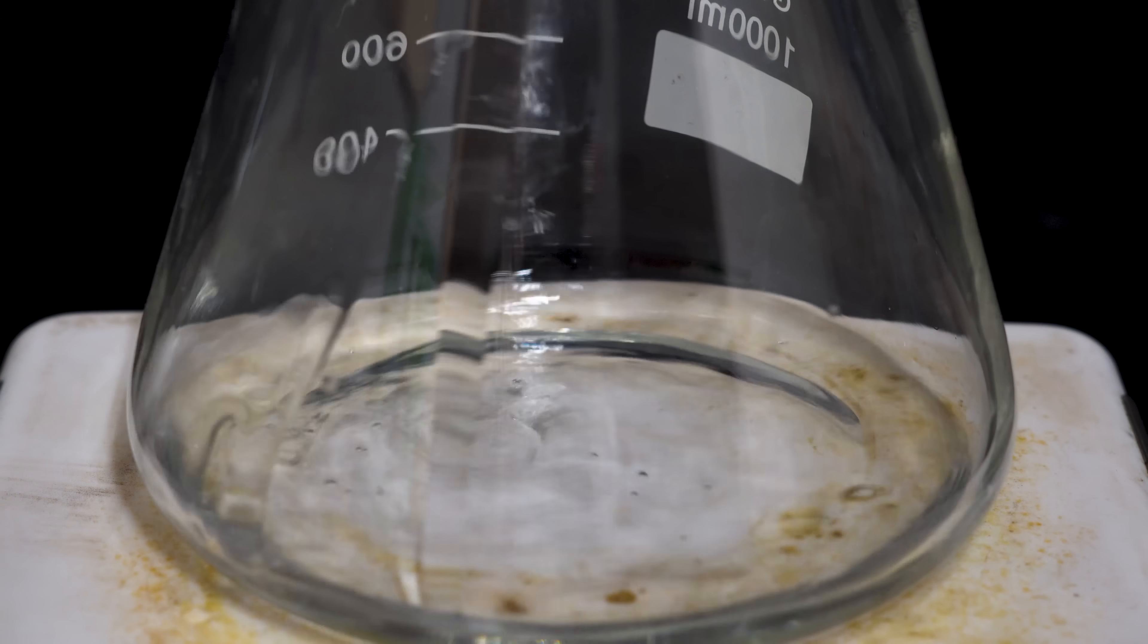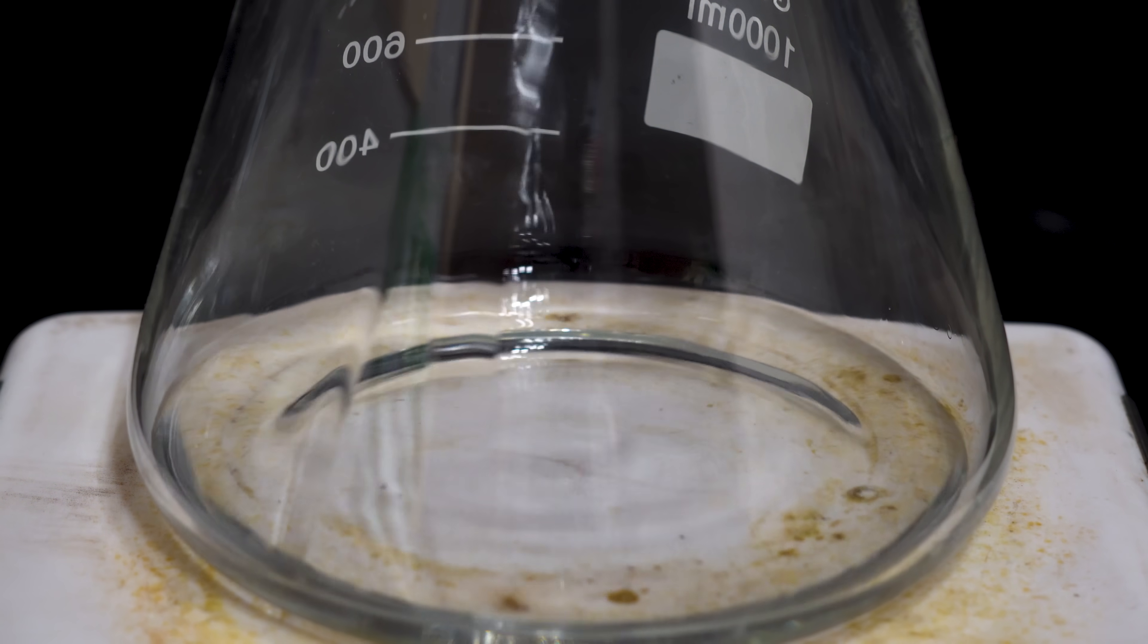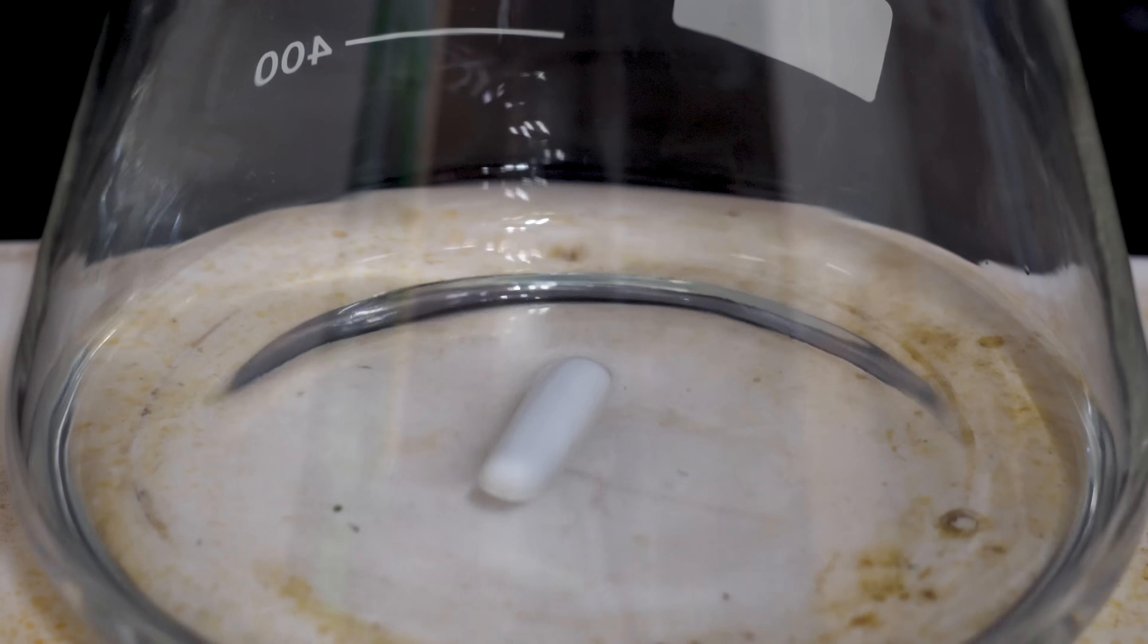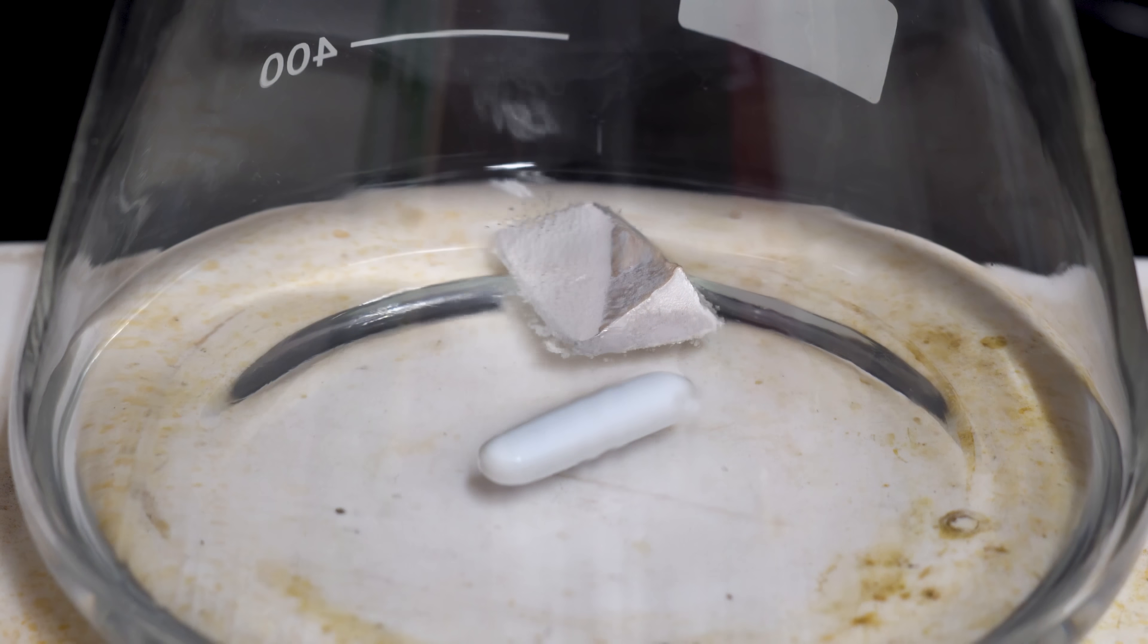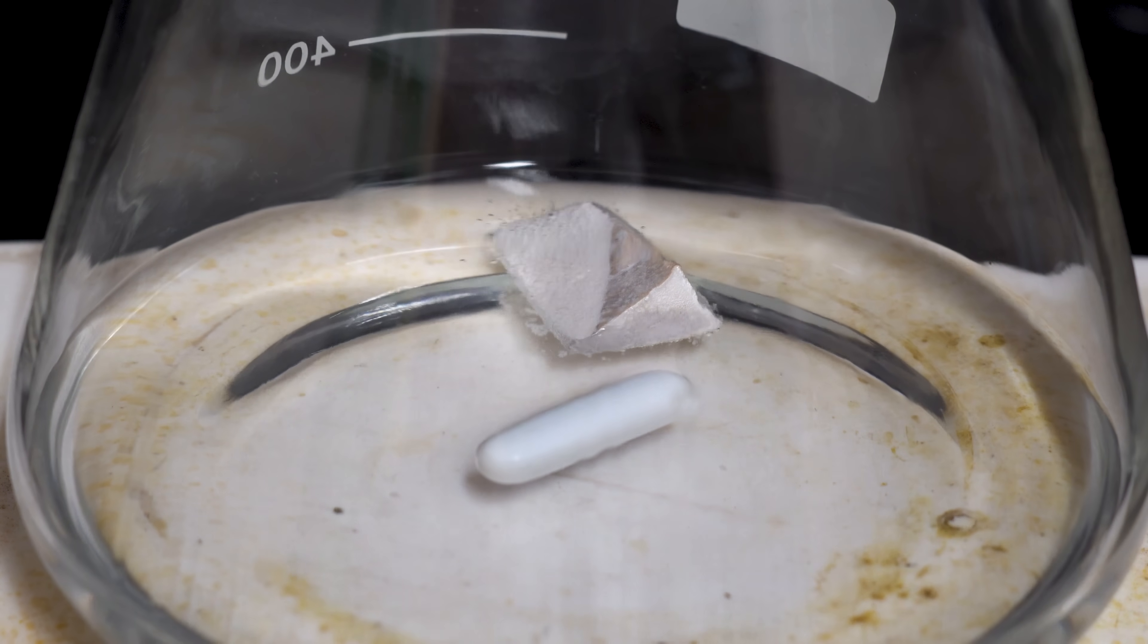To make the sodium ethoxide, we're first going to need some anhydrous ethanol and I decided to pour some into an Erlenmeyer flask. I also threw a stir bar in for fun.